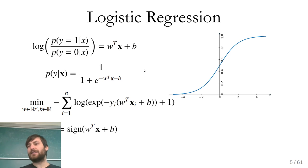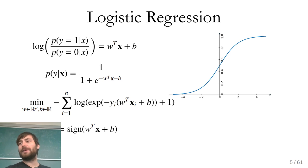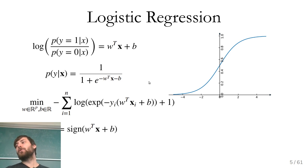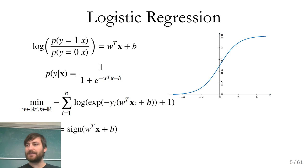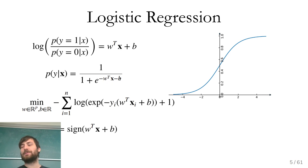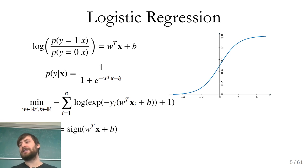If you rearrange this, using this assumption, the probability of Y being one given some data point X works out to be one over one plus e to the minus W transpose X minus B. This is the logistic sigmoid, which takes W transpose X plus B — going from minus infinity to infinity — and squashes it between zero and one, so you get a probability out.